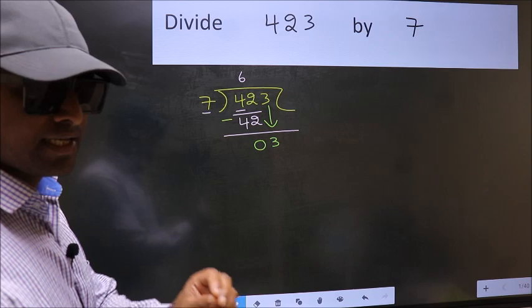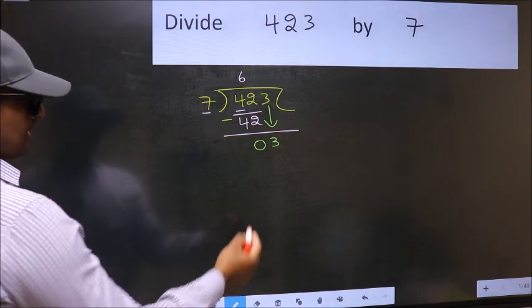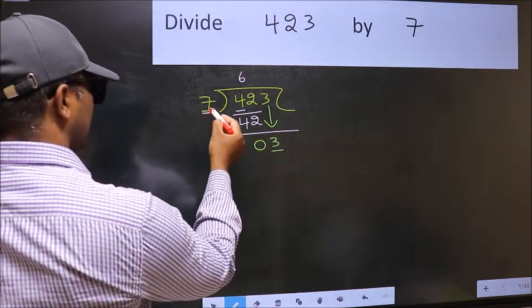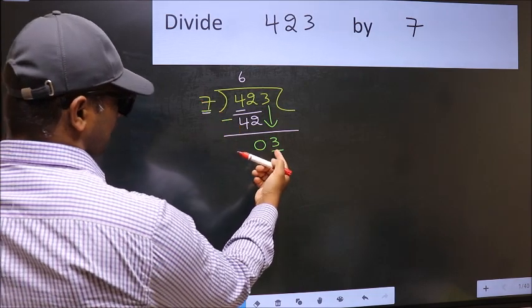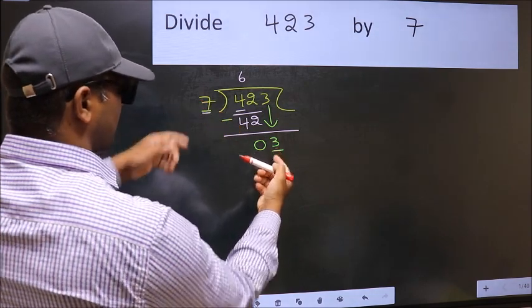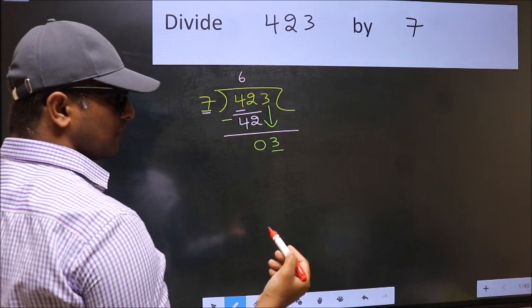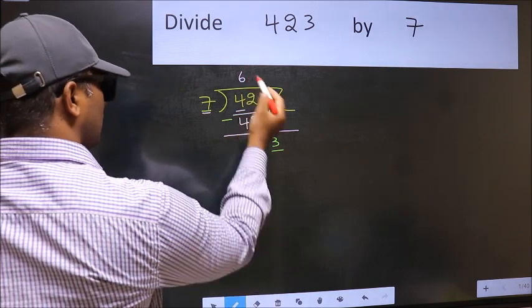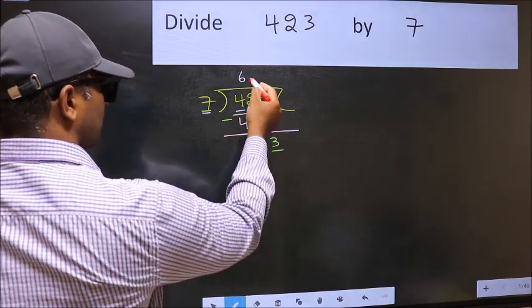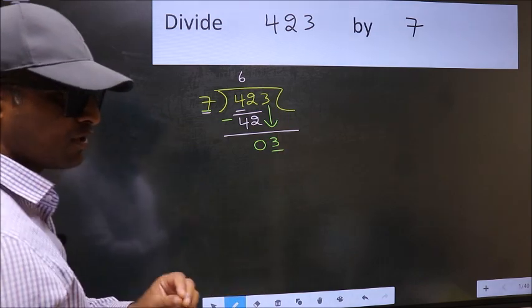And the mistake is this. Here we have 3 and here 7. 3 is smaller than 7. So what many do is they directly put dot and take 0, which is wrong.